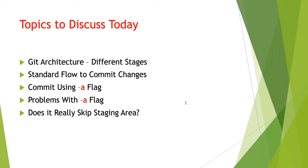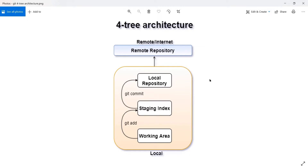Let's start by understanding the different stages in git. This is the git four-tree architecture — I've discussed git architecture and workflow in detail in a previous video, which you can find in my git playlist. We have two repositories: local and remote. In the local repository we have three stages: first is the working area, where we modify, add, or delete files. Once done, we use git add to move those files to the git staging index.